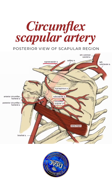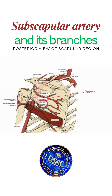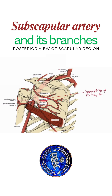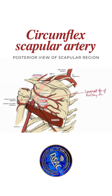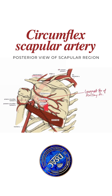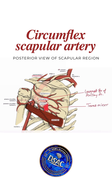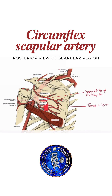To summarize: the subscapular artery is the largest branch of the axillary artery, but it's not a very long artery because it soon gives off the circumflex scapular artery. This branch perforates teres minor on the lateral border of the scapula on the dorsal side in its upper portion. After perforating teres minor, it reaches the dorsum of the scapula right in the infraspinous fossa, where it participates in the anastomosis.